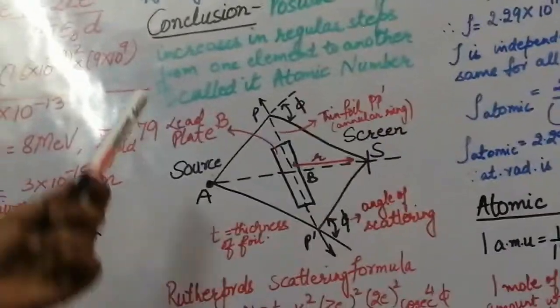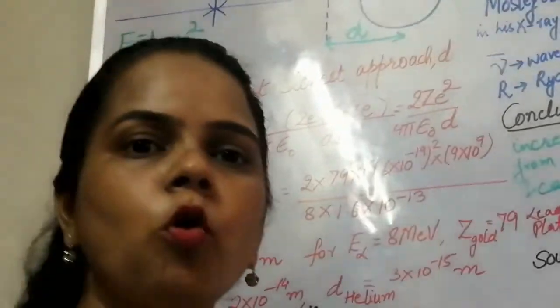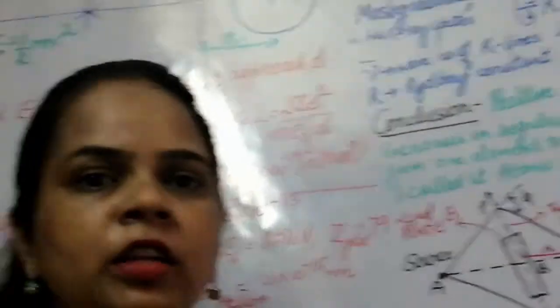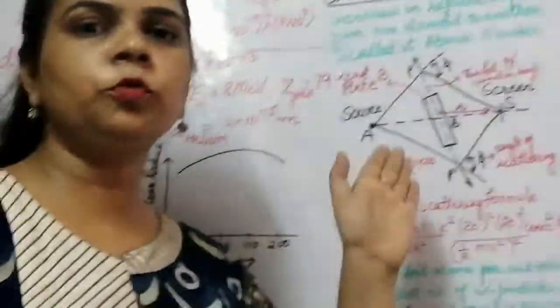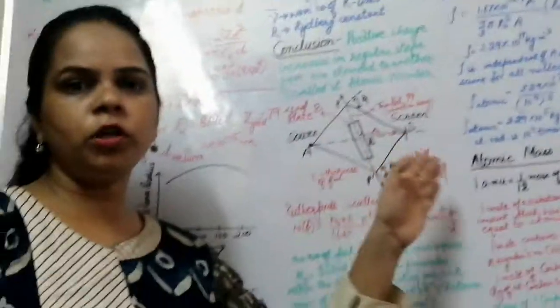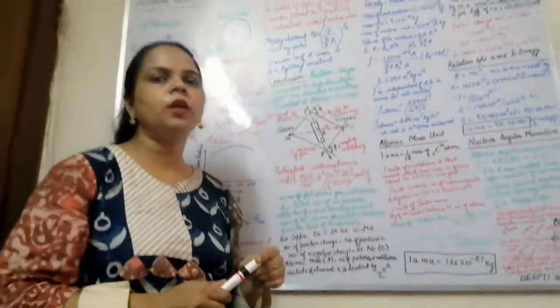What they observed was that when stepping from one element to another, the positive charge increased in regular steps of one unit. This regular step-by-step increase of positive charge was called the atomic number. As seen in the periodic table, the atomic number increases by one for each element — hydrogen is 1, helium is 2, lithium is 3, and so on.